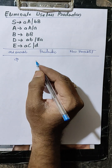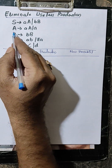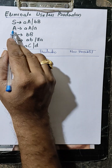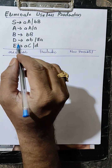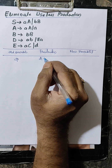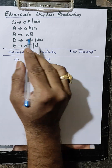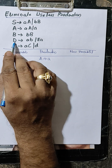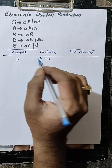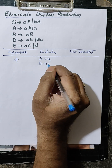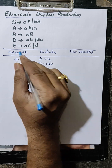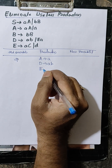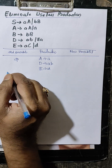First, find which variable can produce a terminal — here direct terminals. E produces A, then D produces A, B and E produce, E produces D.